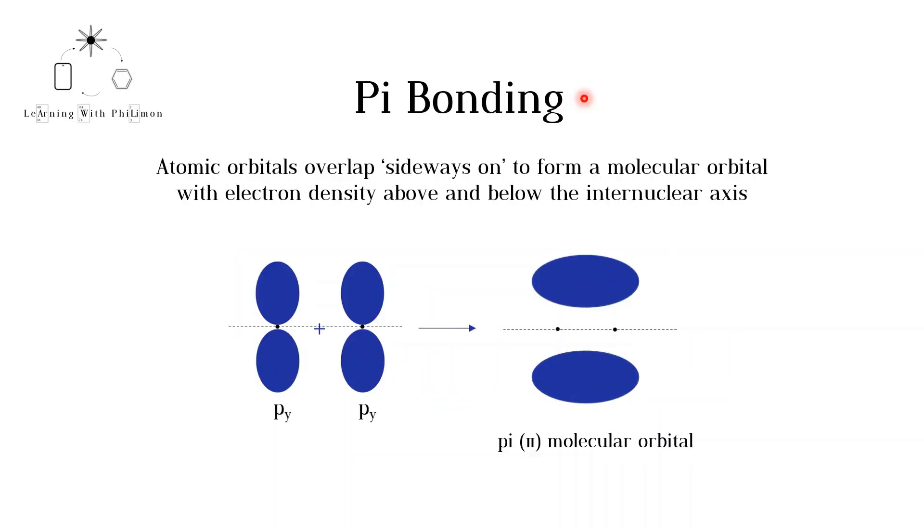Pi bonding is when atomic orbitals combine sideways on to form a molecular orbital with electron density above and below the internuclear axis. Py and pz orbitals are perpendicular to the internuclear axis. When two py orbitals overlap, for example, we get the following pi molecular orbital. Note that the electrons can be above or below the internuclear axis, but not on the internuclear axis.